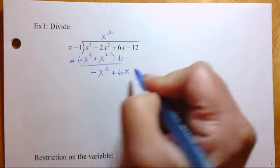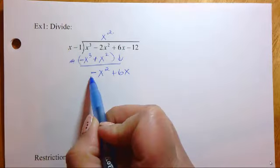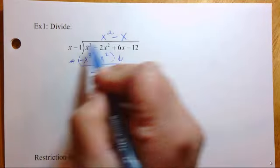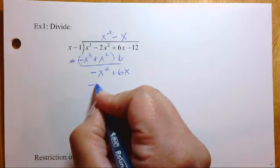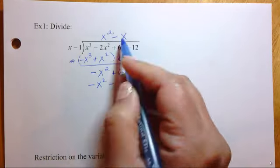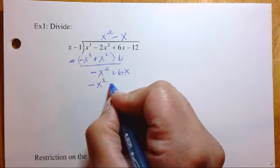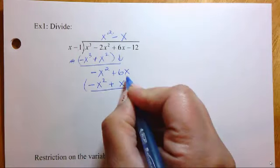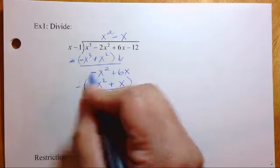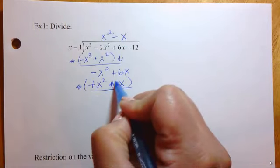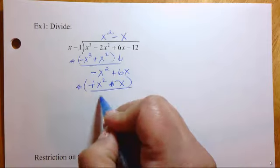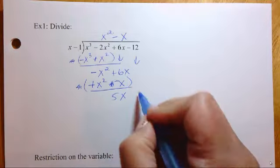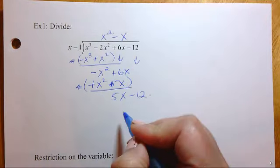Bring down the 6x. And then think, okay, so what times x is going to give us negative x squared? That's going to be negative x. Negative x times x is negative x squared minus, and then multiply it with that as well. So that's plus x. So we want to subtract that. So let's, we could just get rid of the bracket, change the signs, and add down. This gives you 0x squared. This gives us 5x, and then bring down the negative 12 over here.